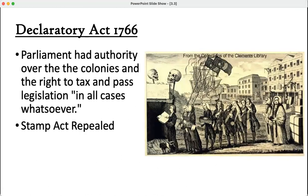The British, of course, don't take all of this lying down. In 1766, they passed the Declaratory Act. Britain would repeal the Stamp Act — the British merchants were losing money and said the tax was not worth it. On one hand, the Declaratory Act repeals the Stamp Act; on the other hand, it says very clearly that Parliament is supreme, Parliament is in charge, and has the power to tax and make any laws it chooses. This is not really what the colonists wanted to hear.